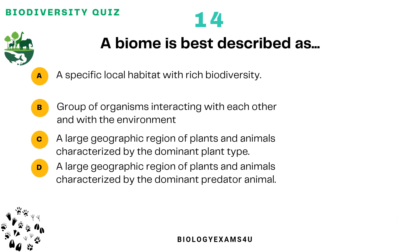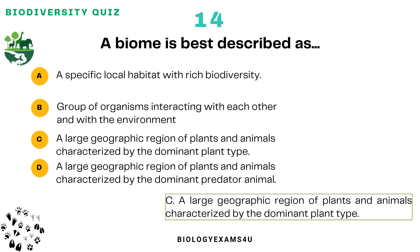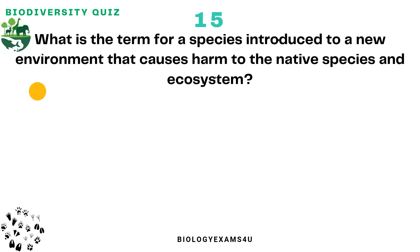Question number 14: A biome is best described as? Option A: A specific local habitat with rich biodiversity. Option B: A group of organisms interacting with each other and with their environment. Option C: A large geographic region of plants and animals characterized by the dominant plant type. Option D: A large geographic region of plants and animals characterized by the dominant predator animal. The correct answer is: a large geographic region of plants and animals characterized by the dominant plant type.